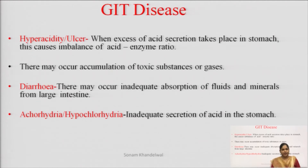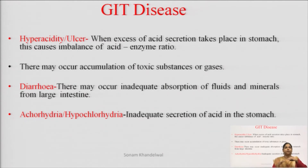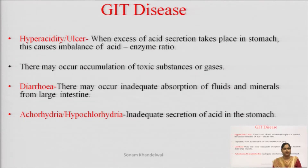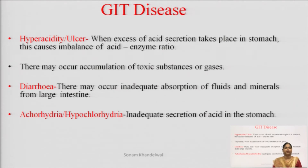Hyperacidity or ulcer — what does hyperacidity mean? Hyper means above normal levels. So hyperacidity or ulcer occurs when our acid secretion is very excess in our stomach, then the acid-enzyme ratio is disturbed or imbalanced, leading to very much accumulation of toxic substances or gases in our stomach.